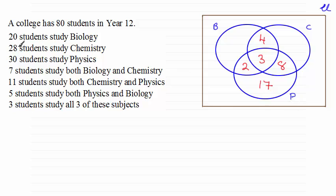If we go back again, we've got here 28 that study chemistry. So all of these four regions must total 28. So that leaves us with 13 in there. You can check that out. That comes to 28.